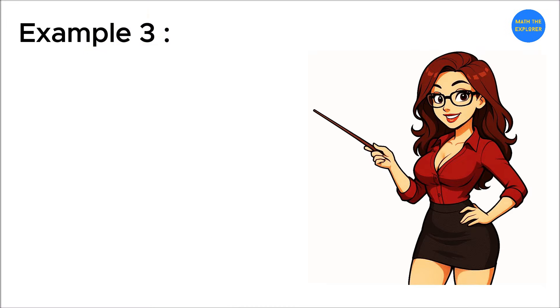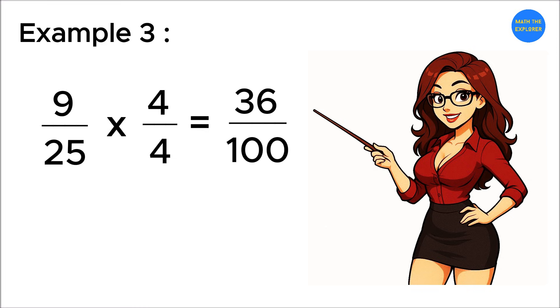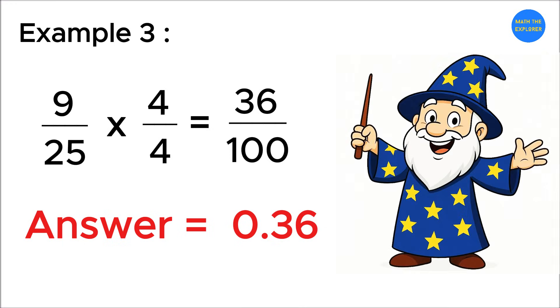Now let's try nine over twenty-five. Again, make the denominator one hundred. Multiply both by four, and we get thirty-six over one hundred. That's zero point three six. Quick and easy. See how cool that trick was? Try it with other fractions and watch the decimals appear like magic. Math is fun when you know the shortcuts.